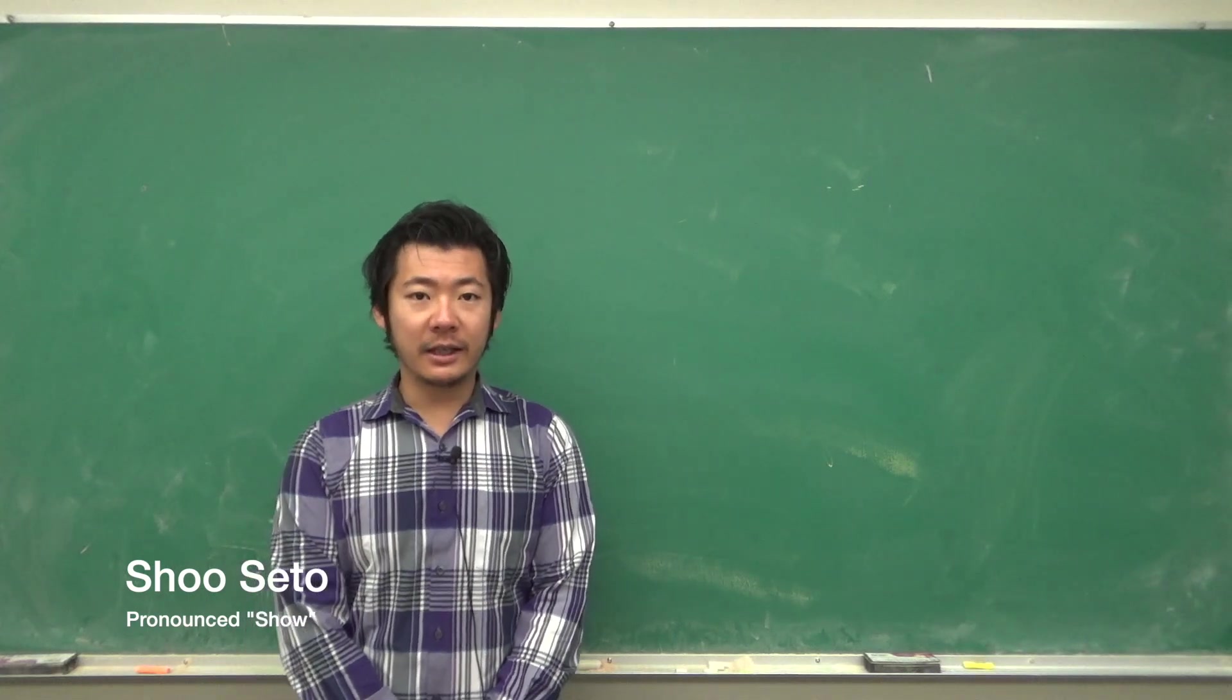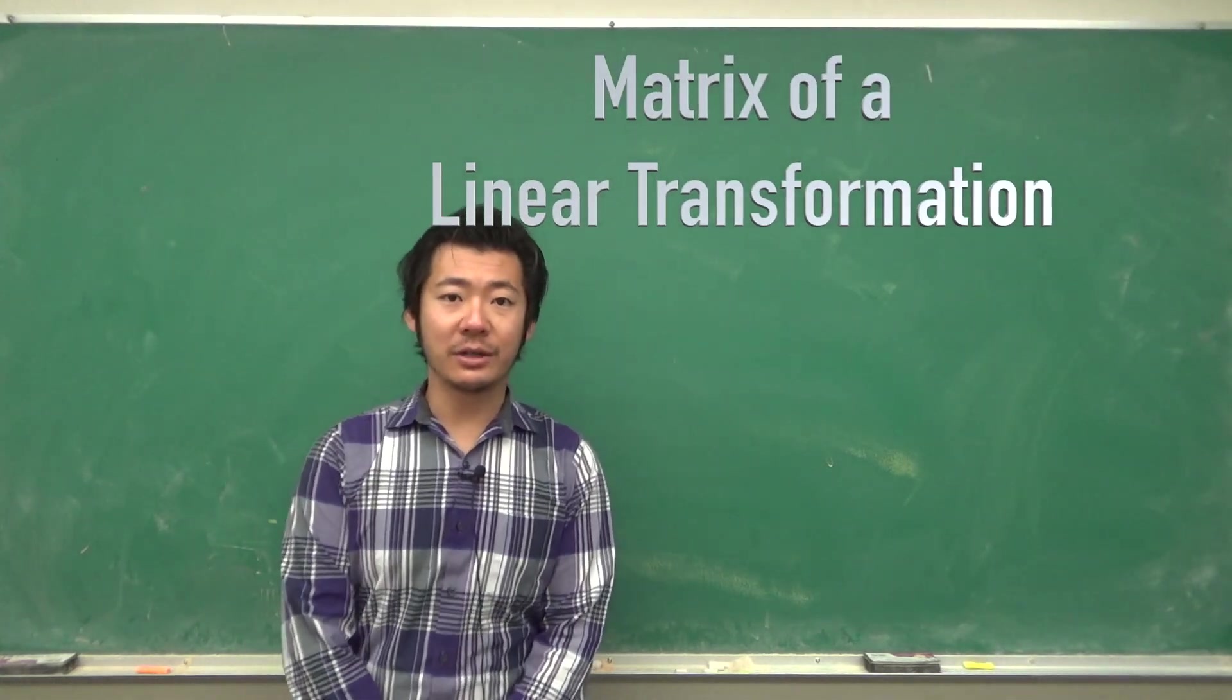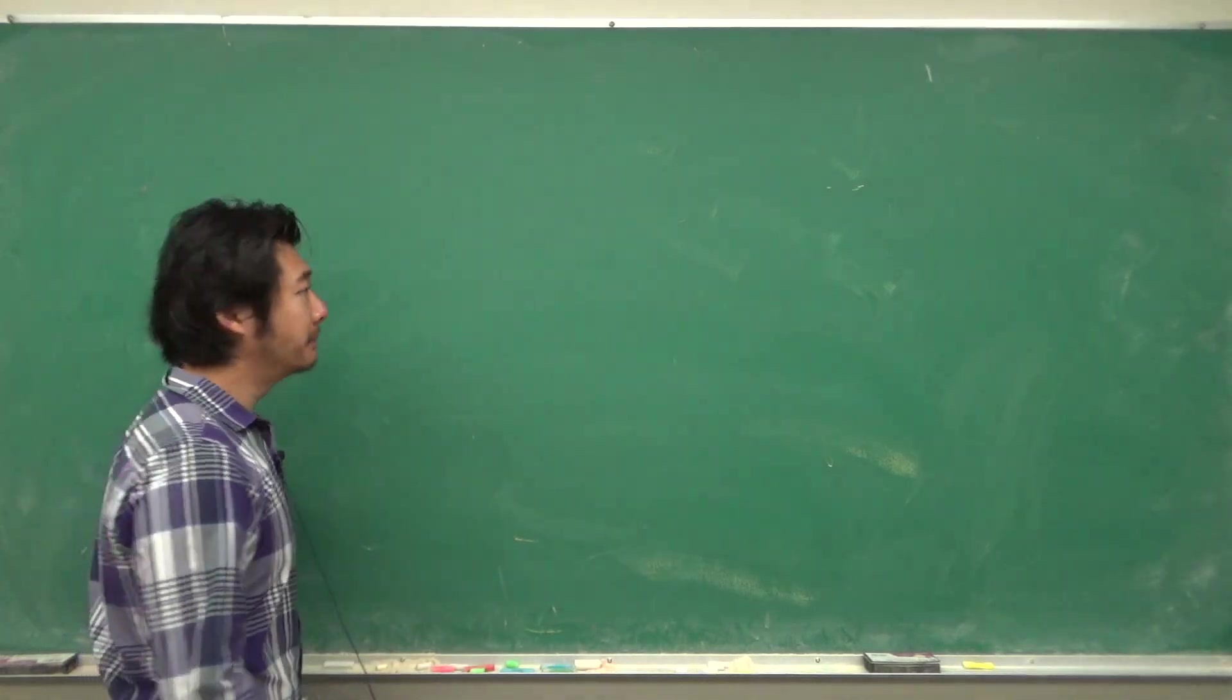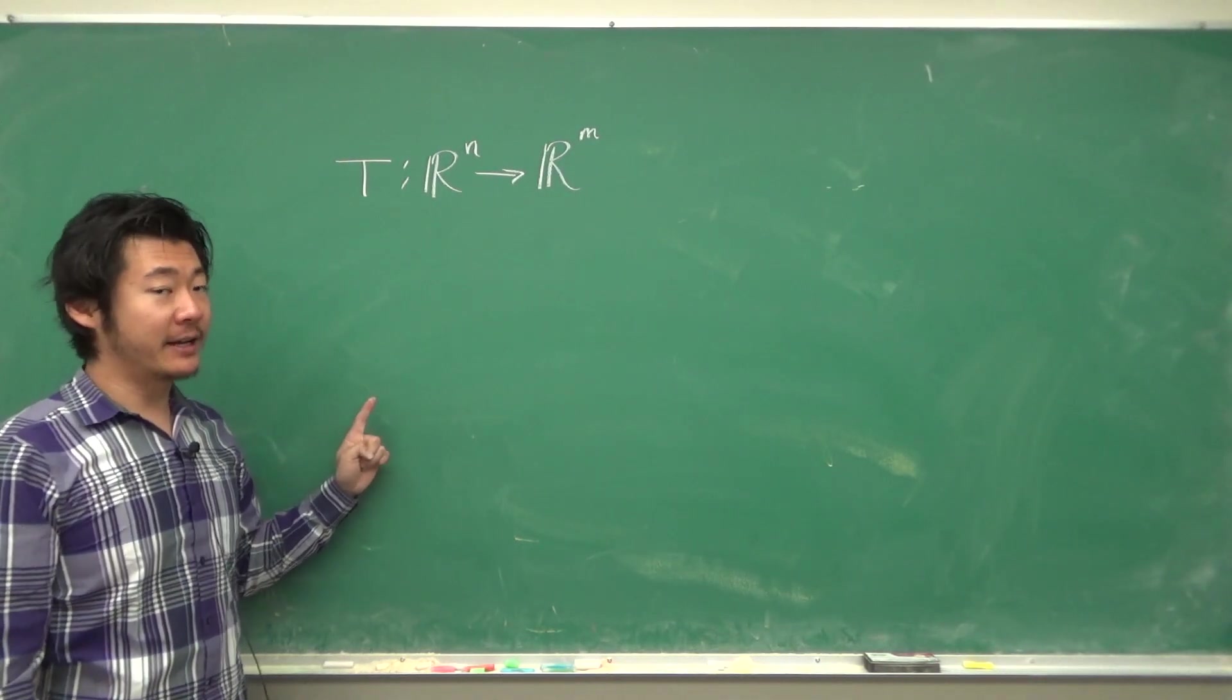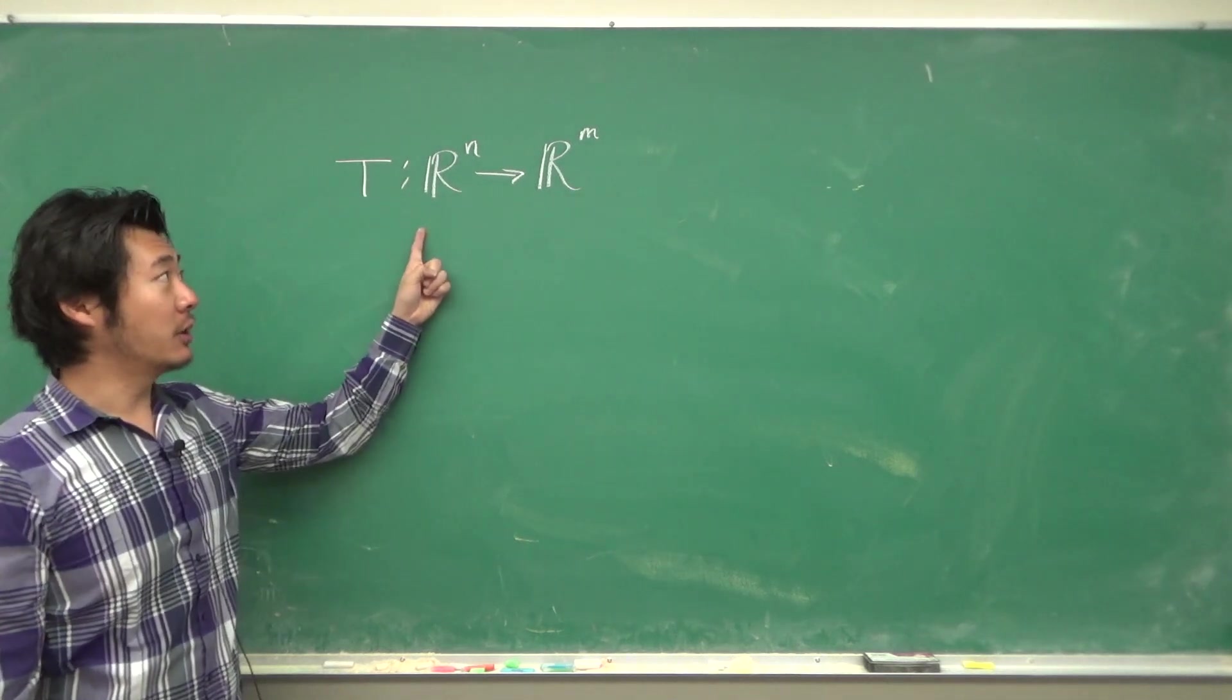Hello everyone. In this video I'd like to talk about the matrix of a linear transformation. So first of all, recall that a transformation is a rule that assigns a vector in Rn to a vector in Rm.